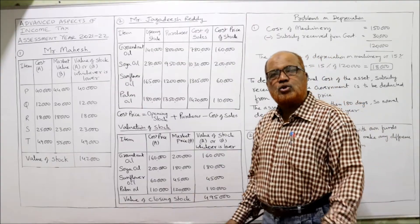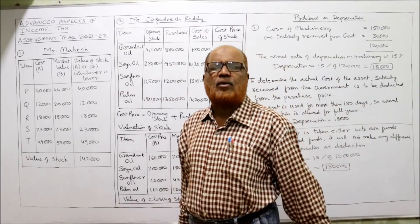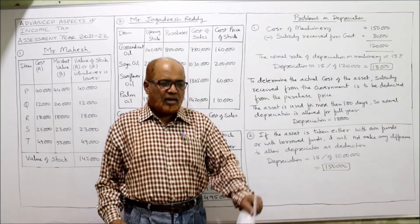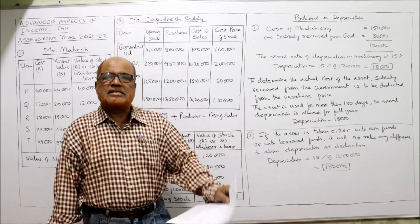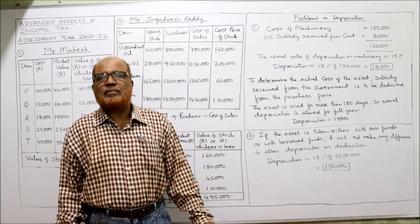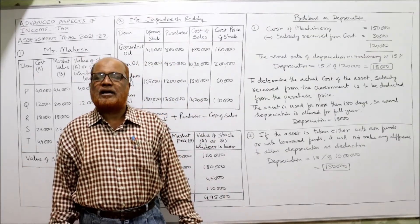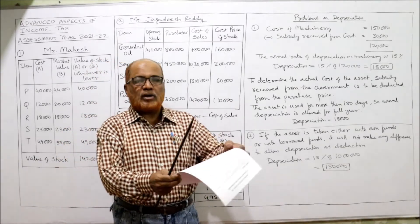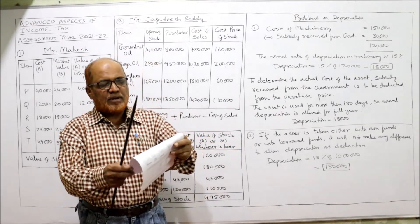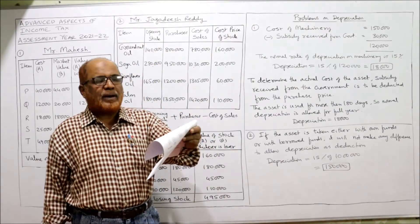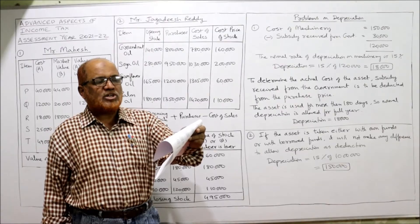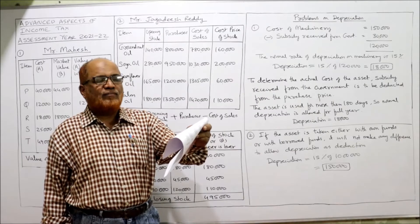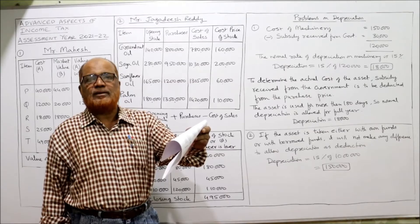That completes the two problems on valuation of closing stock. Now moving to the next topic: depreciation. The first problem on depreciation involves Mr. Arvind, who purchased machinery for Rs. 1,50,000 on 15th May 2020. The previous year is 2020-21 and the assessment year is 2021-22.